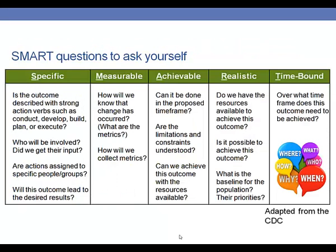Another way to make sure that the objectives you're writing are SMART is to start asking yourself SMART questions. For example, is the outcome you're looking to achieve using action-oriented words — like you're looking to conduct, develop, build, plan, or execute something? Who is going to be involved, and did you get their input in the process? Are there actions going to be assigned to particular groups or people? And how is this outcome going to lead to the desired results? It's important to be as specific as possible when answering all of these questions.